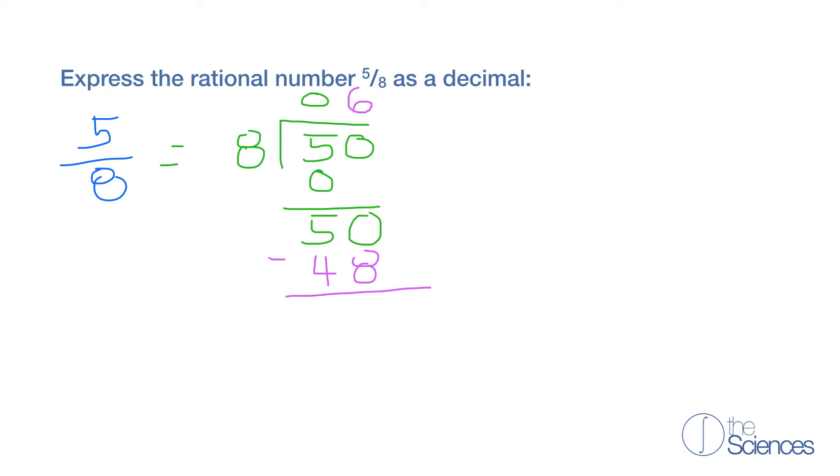50 minus 48 is 2. We're going to write another 0 and then we're going to drop that down. So now how many times does 8 go into 20?